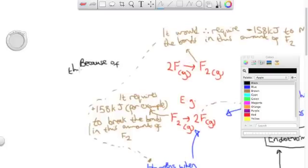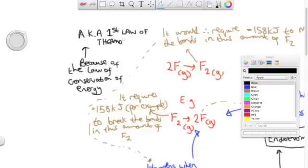Because of the law of conservation, the amount of energy to make 2F turn into F2 is the same as the amount of energy going from F2 to 2F.